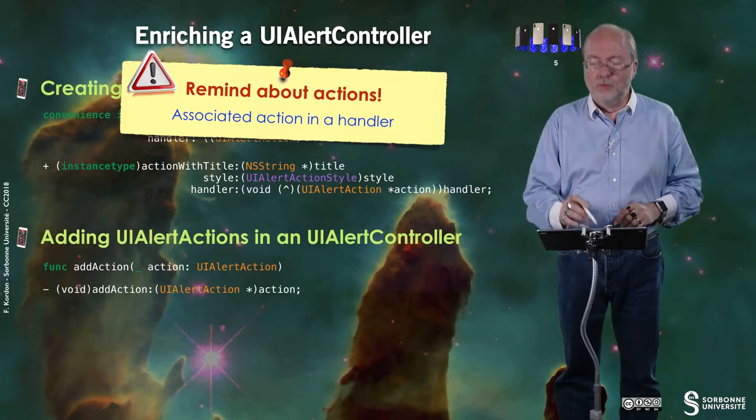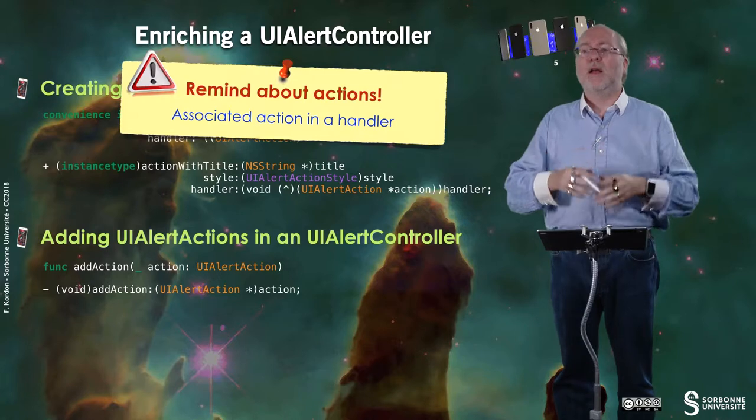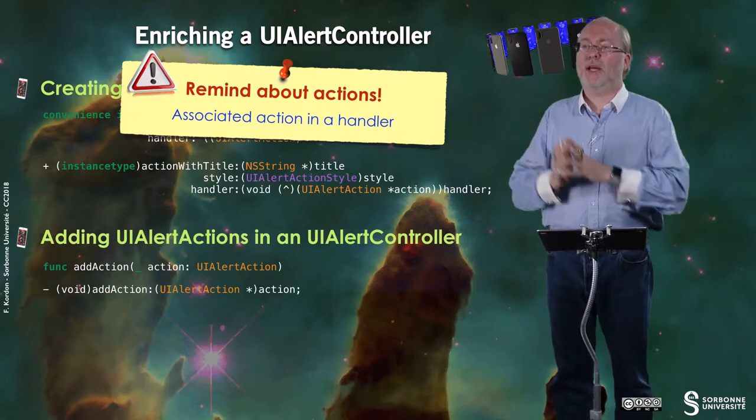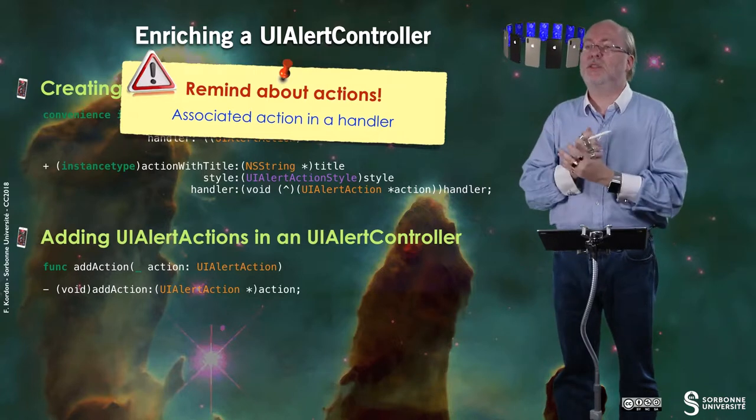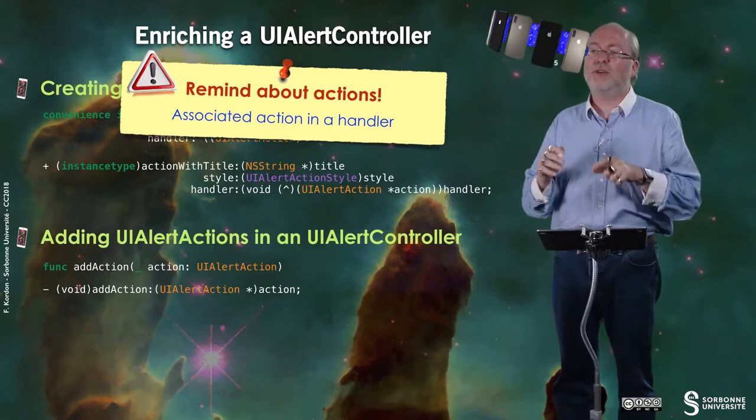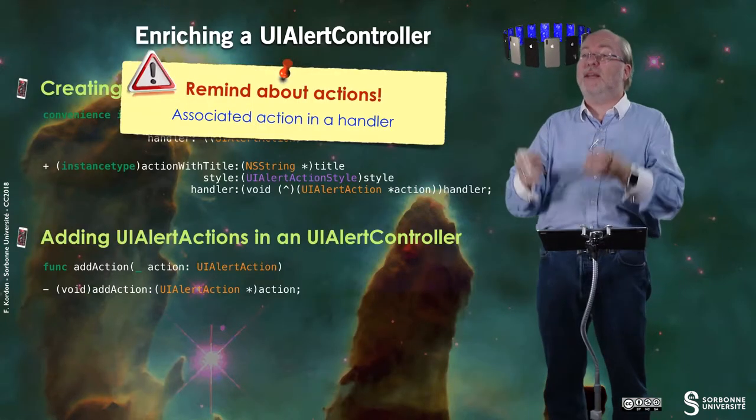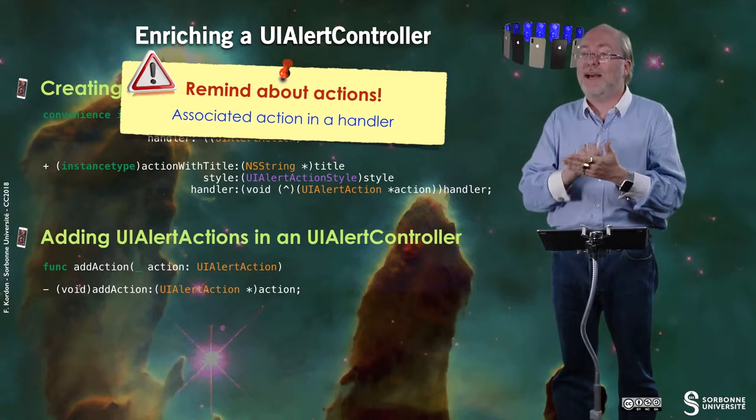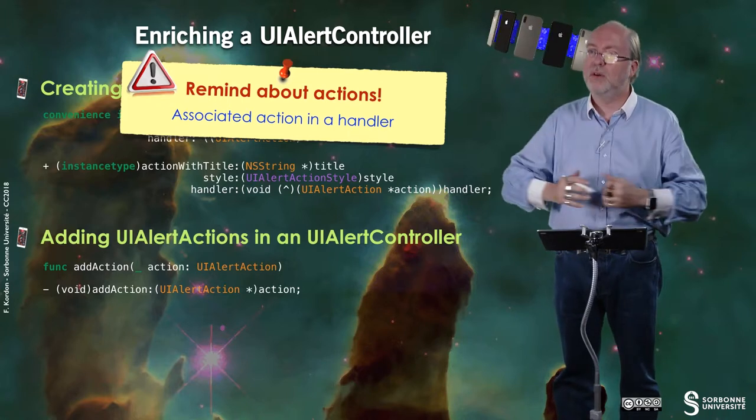Remind one important thing about actions. As for UIButtons, you know you can associate a target. As for UIBarButtons, where you also associate a target, you can associate code to the options that you are selecting. But in fact, you do it differently. This is this handler that you have associated when you create this action. And in fact, this handler is either an anonymous function that you just provide online and it is executed when this item is selected, or it is a reference to a method that can be shared by several buttons.